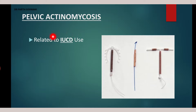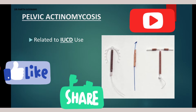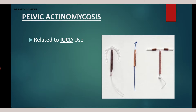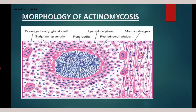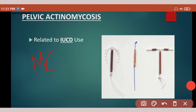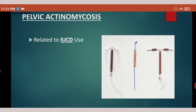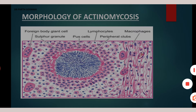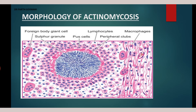The fourth category is pelvic actinomycosis, which is related to the use of an intrauterine contraceptive device — the IUCD or copper-T. Because of IUCD use, you can develop pelvic actinomycosis involving the uterine area. This is a very important MCQ topic: if a case history of IUCD insertion is given with a pelvic inflammatory disease-like scenario, the diagnosis can be pelvic actinomycosis.